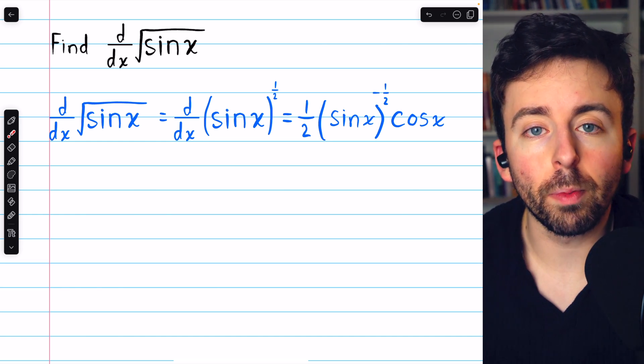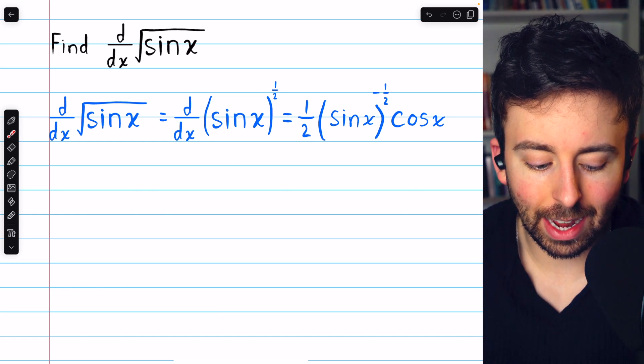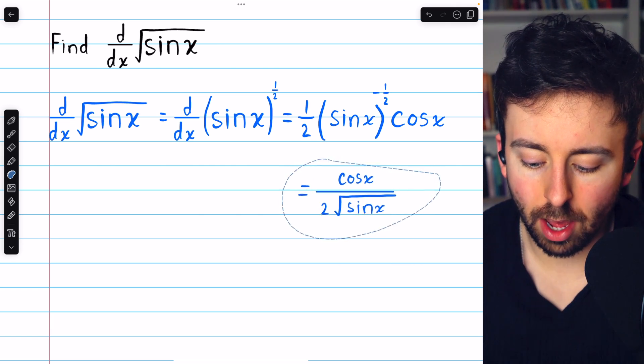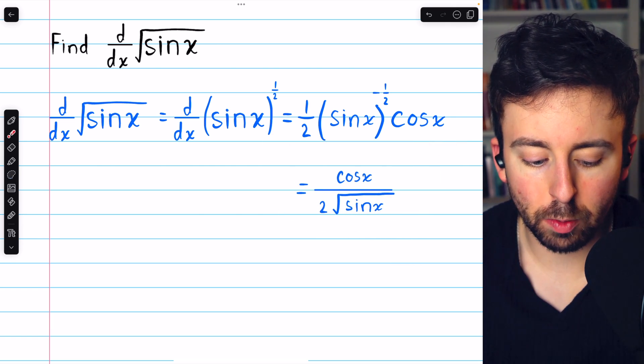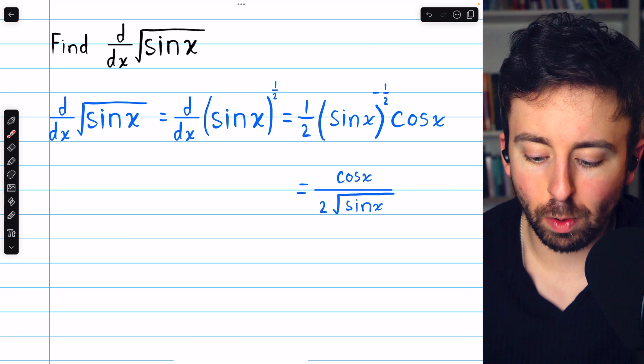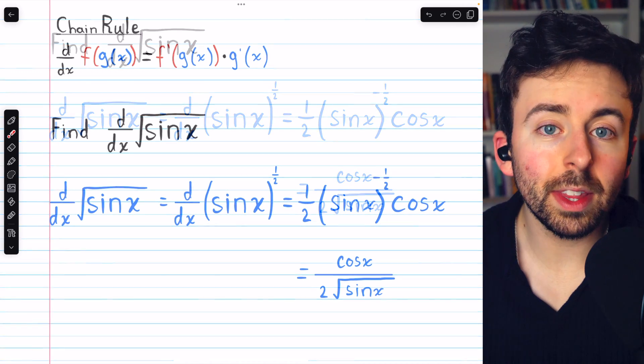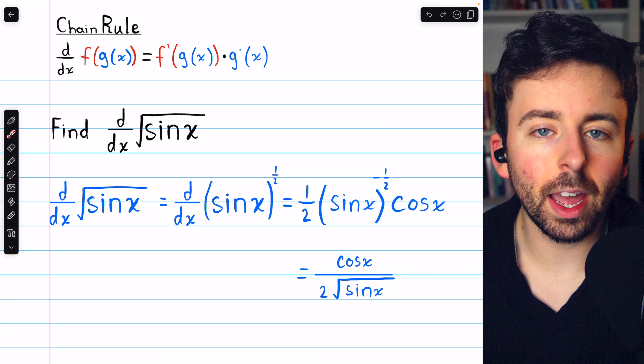And if you're a sucker for positive powers, you don't like that negative power, we could move the sine x down to the denominator, and heck, even rewrite the one-half power as a radical. So you might prefer to write it like that. But that's how you find the derivative of the square root of sine x.